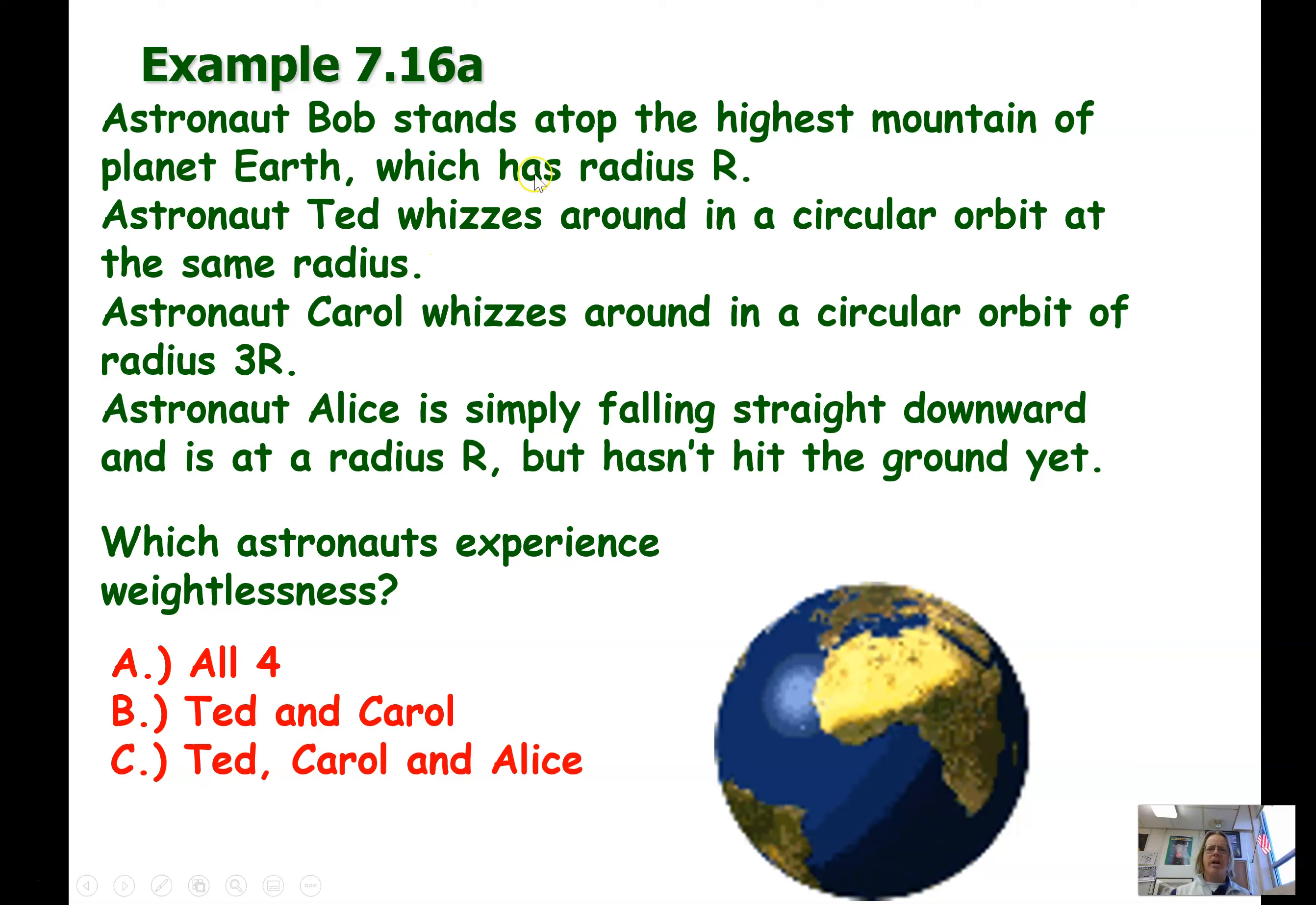All right. Let's do some examples here. So astronaut Bob stands on top of the highest mountain, planet R, which has a radius of R. Ted whizzes in a circular orbit at the same radius. Astronaut Carol whizzes in a circular orbit of three times the radius. Astronaut Alice is simply falling straight downward and at a radius of R, but hasn't hit the ground yet. Which of these astronauts experience weightlessness? It turns out all of them - whoops, not all of them, because Bob is on a mountain. Gravity pulls down, the mountain pushes back. Bob is not in free fall. Ted, Carol, and Alice, letter C, they're all in a weightless sensation feeling because they're all falling. Bob is not falling. So there's Bob. There's Ted. There's Carol. Way the heck out there. So it turns out Ted and Carol are falling. Bob is not. Are we missing Alice? Well, there's Alice. She's falling a bit closer. She's having a bad hair day.